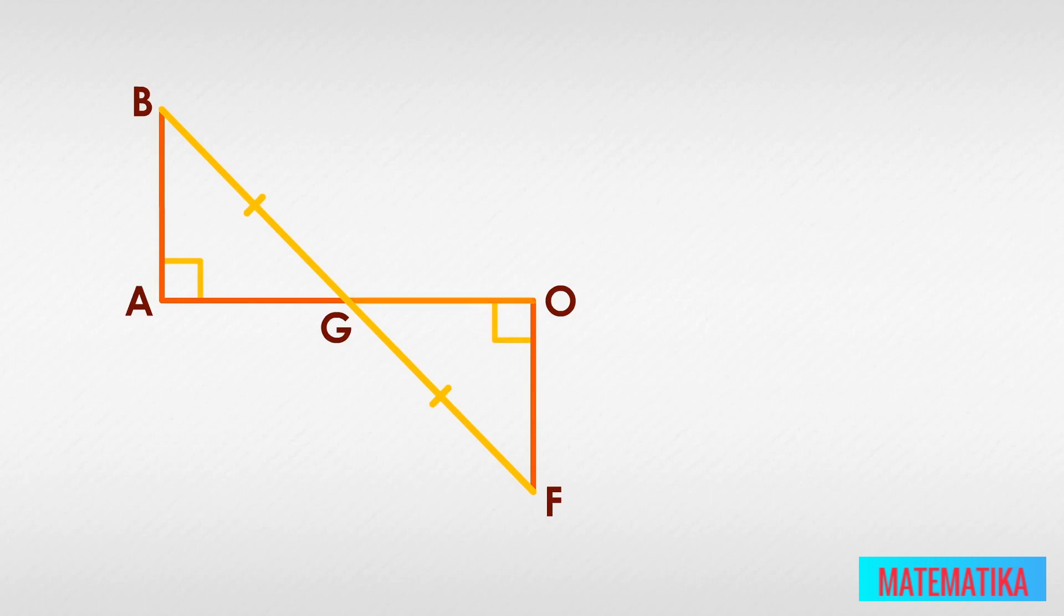Well, we know sides OG and AG form a straight line because they are segments of line OA. We know that both right triangles share point G, creating two interior angles, angle FGO and angle BGA, which are vertical angles of two crossing lines. Vertical angles are congruent. Now we have another set of congruencies.